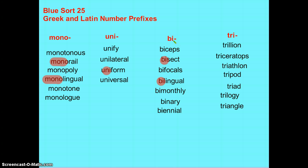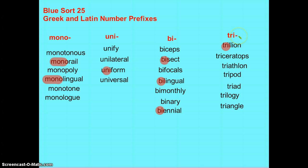Bi means two. Biennial would mean every other year. Bi-monthly means every other month, or every two months.